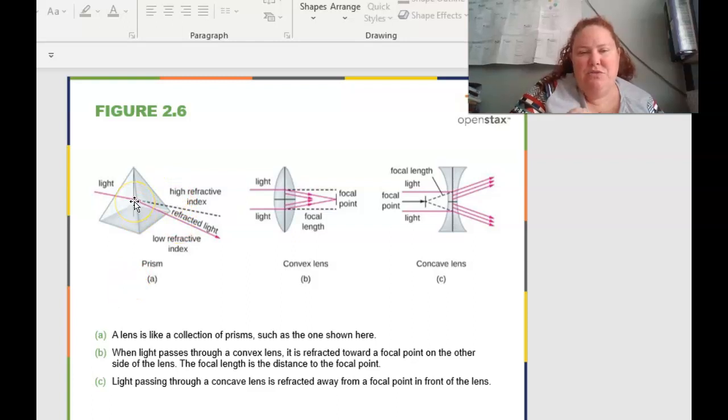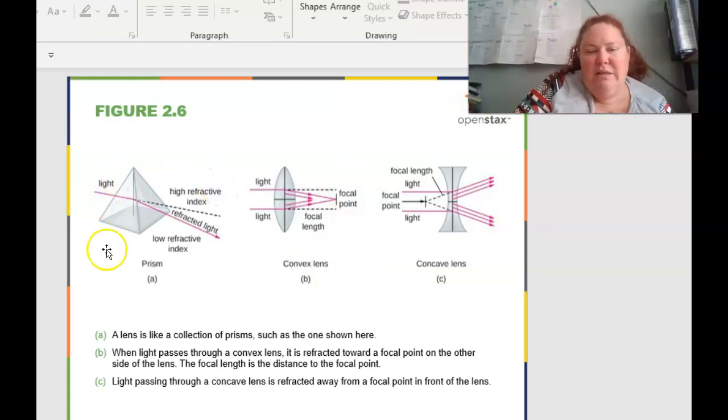A couple of different things with lenses. You have some prisms, which are going to separate light. You have convex lenses, which are going to focus them, and then concave, which is going to spread even more. So a lens is like a collection of prisms. When light passes through the convex lens, it's refracted towards a focal point on the other side of the lens. Where light passing through a concave lens is refracted away from the focal point of the lens.